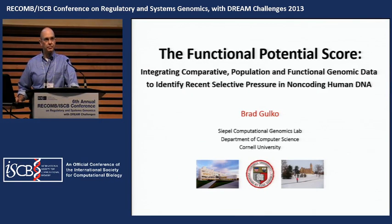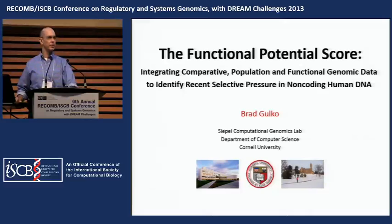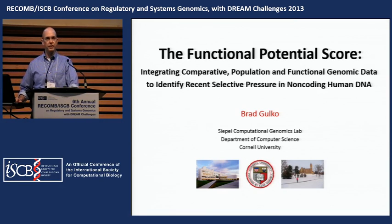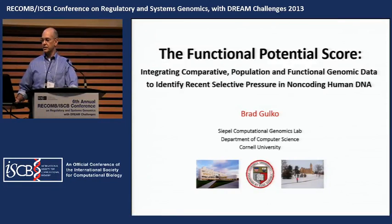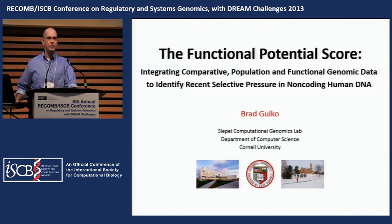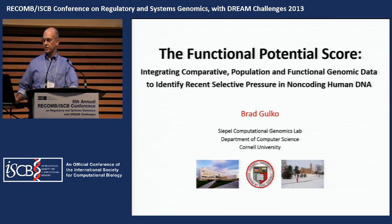My name is Brad Gulko. I'm a PhD candidate at Adam Siepel's Computational Genomics Lab at Cornell University. Our lab's research investigates the interplay between evolutionary and functional genomics, and my own work focuses on integrating functional genomic assays, like RNA-seq and ChIP-seq, with both primate divergence and human population genomics, in order to characterize non-coding DNA that influences development and disease processes in humans.